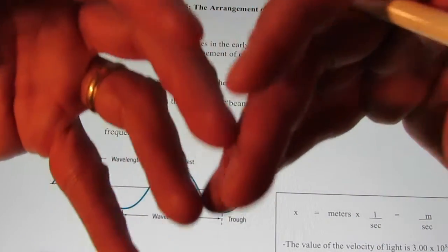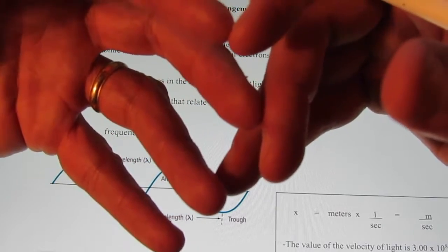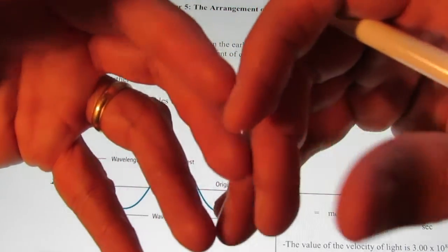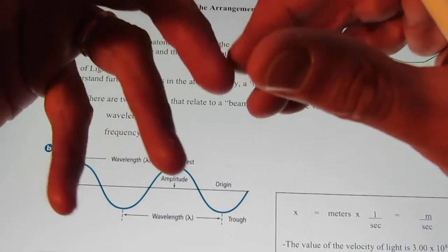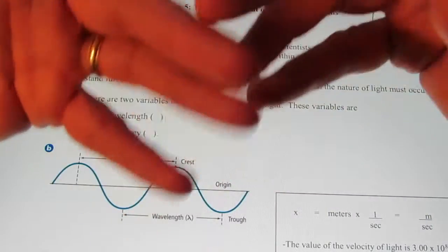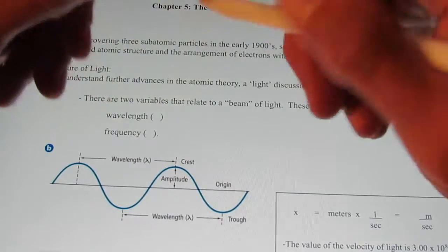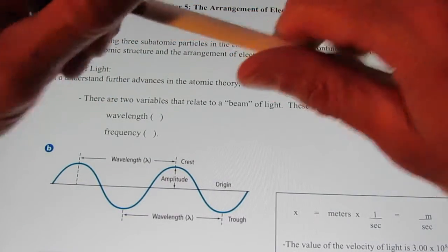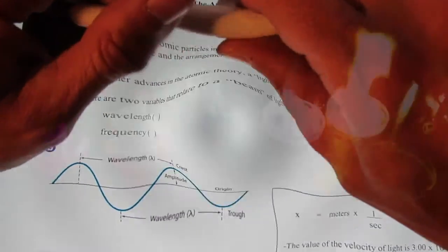Now, we really didn't know what that light was caused by. We just knew that each metal gave off a characteristic color. So, let me show you that video for right now, and then we're going to come back to our notes.